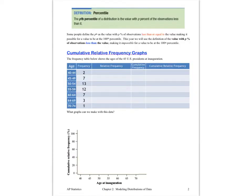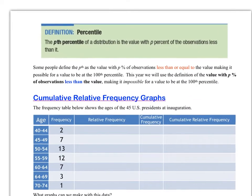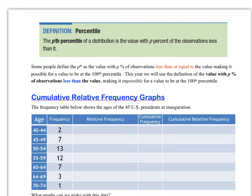Here is the formal definition of percentile: the pth percentile of a distribution is the value with p percent of observations less than it. We're going to calculate it just the way we saw with Jenny's test score example. Now we'll look at another example so that we can create a cumulative relative frequency graph.